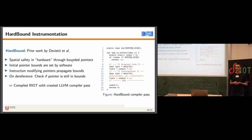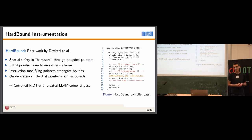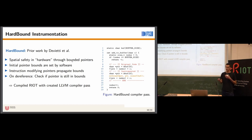HardBound achieves spatial safety through bounded pointers in hardware — in our case, in the virtual prototype we have created. HardBound relies on the software to communicate initial pointer bounds to the hardware. Instructions modifying pointers, such as pointer arithmetic, propagate these bounds. Every time a pointer is dereferenced, you can then check in the memory interface of the hardware whether the pointer is still within the bounds originally communicated by the software.